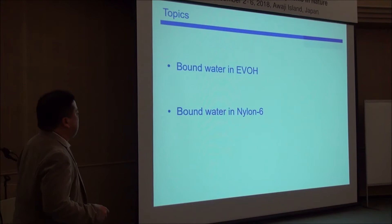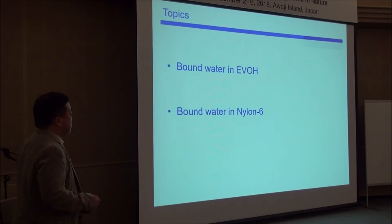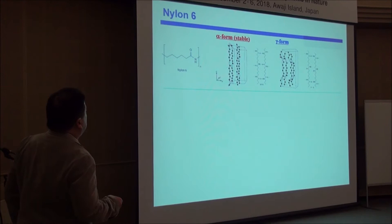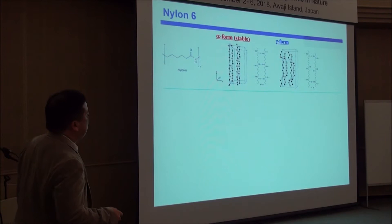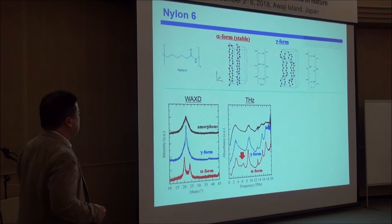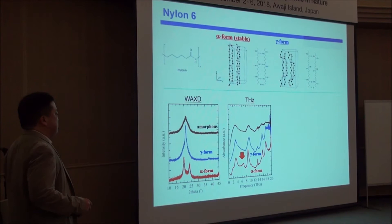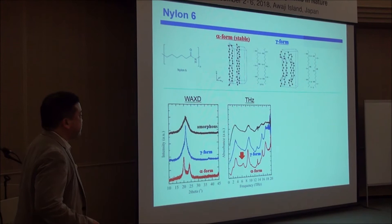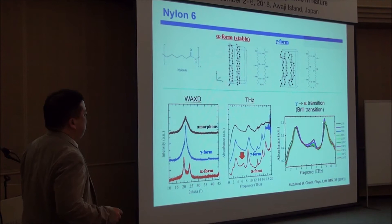Now we are going to measure another sample — nylon 6. This is an ongoing project. Nylon 6 takes two kinds of crystal structures: one is alpha-form and the other is gamma-form. We can see the difference clearly in the X-ray diffraction pattern for alpha-form and gamma-form. Also in THz we can see this difference clearly — there are several peaks, and we see a characteristic band of alpha-form.